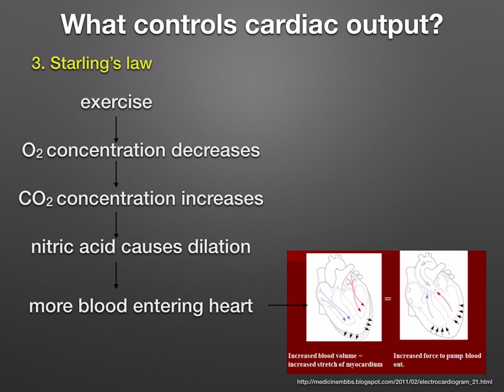During exercise, the muscles use oxygen, so the oxygen concentration of the blood is low and the carbon dioxide concentration is increased. Nitric acid gets formed, which causes dilation of the blood vessels by relaxing the muscles. This results in an increase of blood moving in the veins, so more blood enters the heart. The cardiac muscles are therefore stretched and the contractions are strengthened.